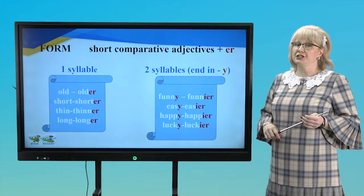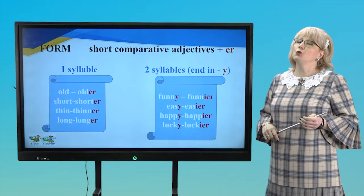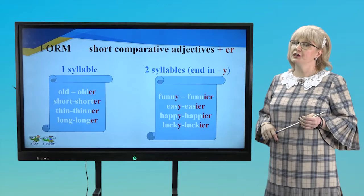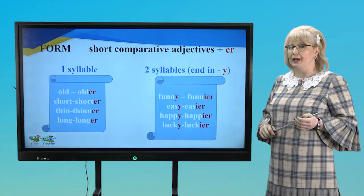If adjectives have two syllables and end in Y, we change Y into I and add ER ending. For example, funny, funnier. Easy, easier. Happy, happier. Lucky, luckier.